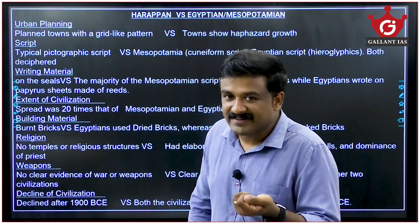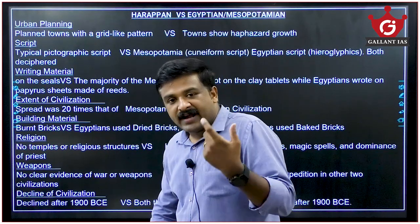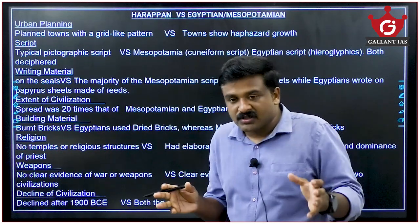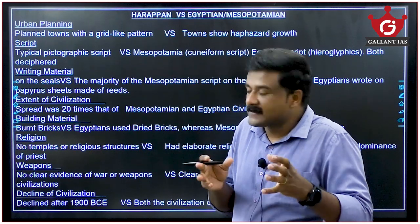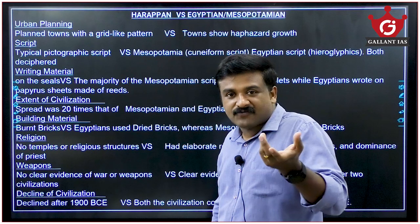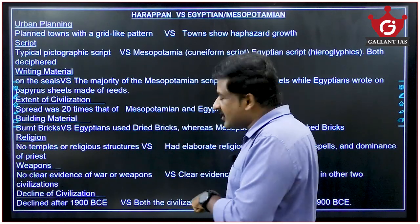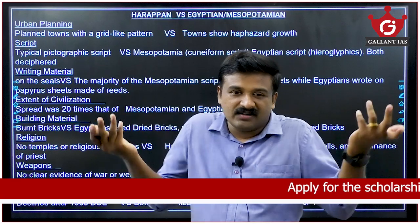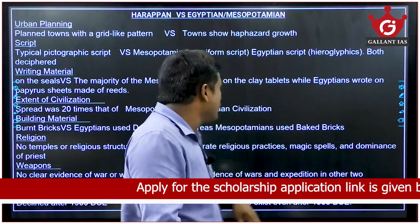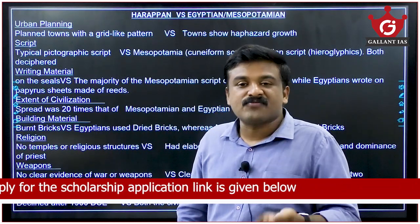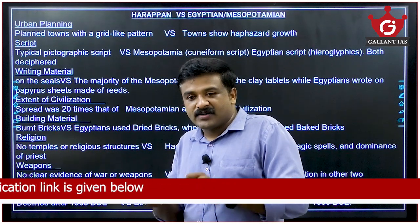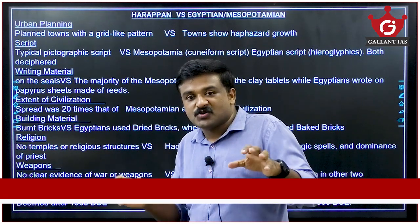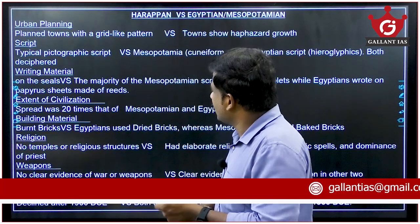The Harappan civilization is known for its very sophisticated town planning and defined city structure — planned towns with a grid-like pattern. In contrast, Egyptian and Mesopotamian civilizations did not follow such unique city planning. Regarding script, the Indus script has not been deciphered yet — it is a boustrophedon script written right to left then left to right. Signs and symbols are used but remain undeciphered, unlike the scripts of other civilizations.